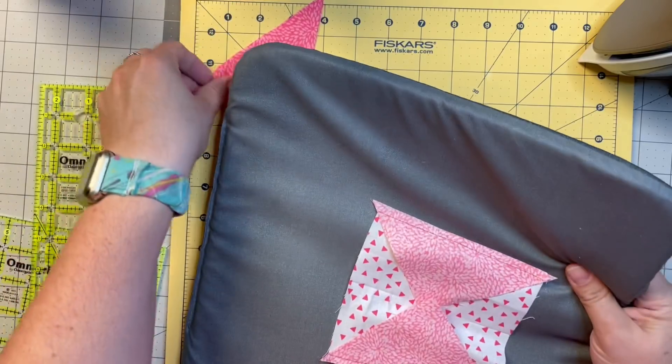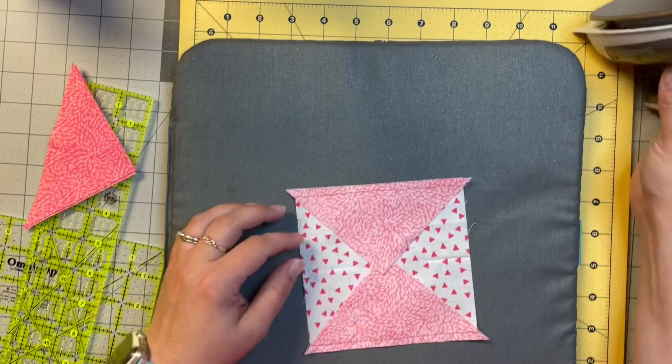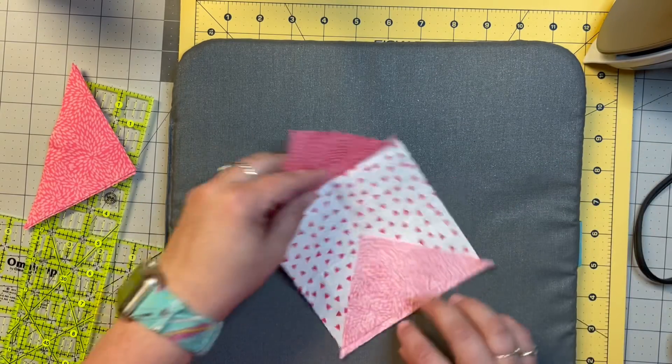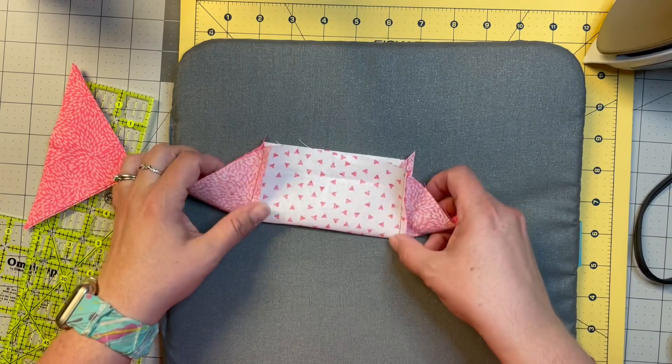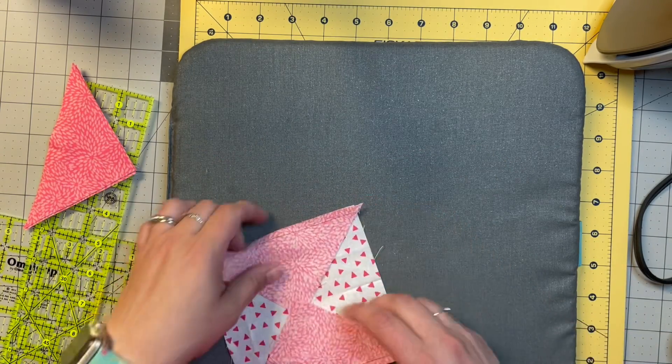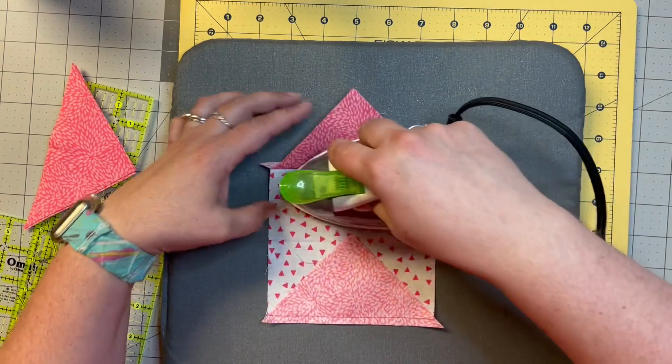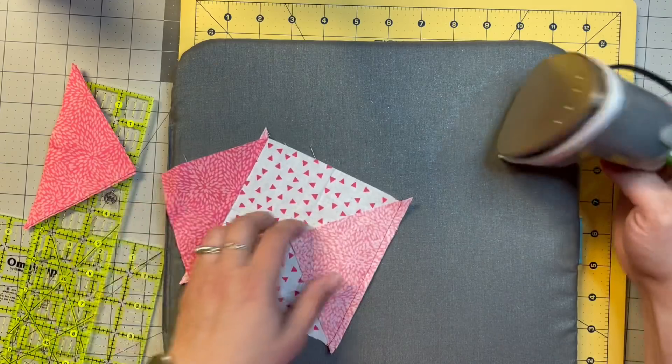I've sewn those and we're going to press them open. Actually, I'm sorry—I skipped a step on this. On this block, I folded it in half and I pressed the corners there, and then I did the other one and pressed the corners there. I had already done that, I'm so sorry I didn't show you.